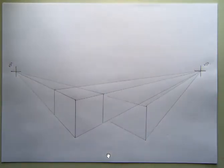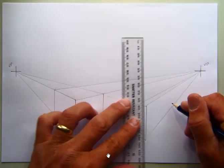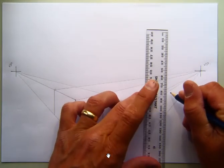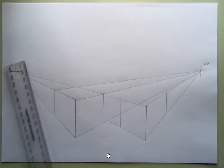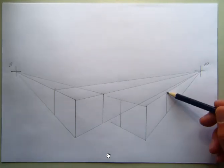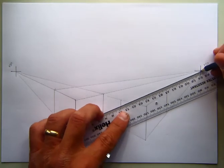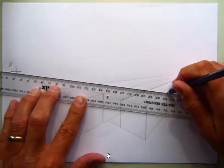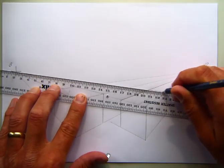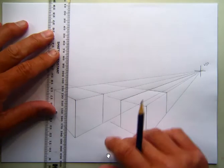So there's the start of my second cube. Decide upon a depth, decide upon a depth and then add the top lines. So from here to the vanishing point and from here to the vanishing point. So there's my second cube and I can repeat that up at the top as well.